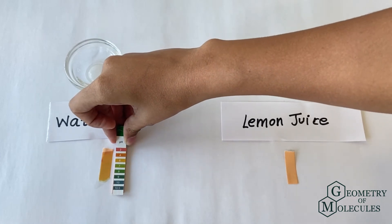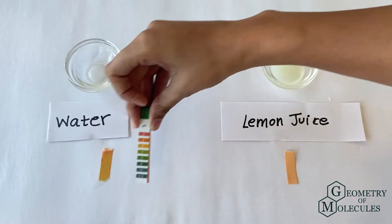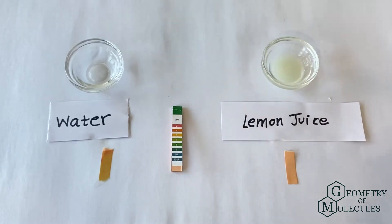As you can see, the strip has instantly changed its color from orange to light green. That means that the pH of water is 7, which is neutral.